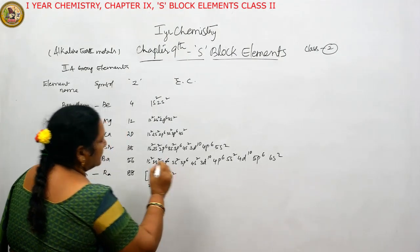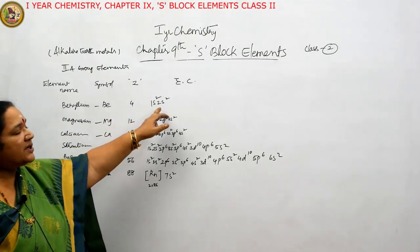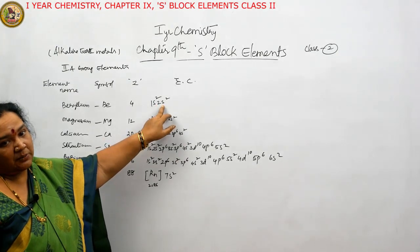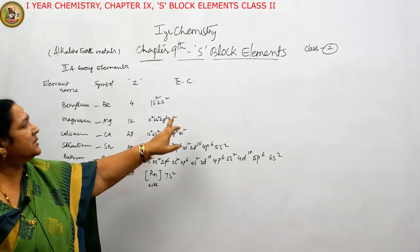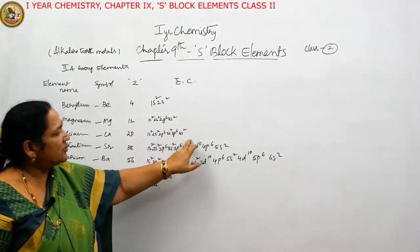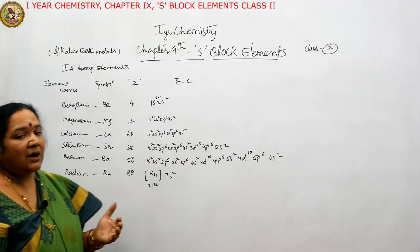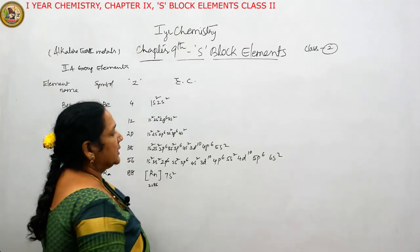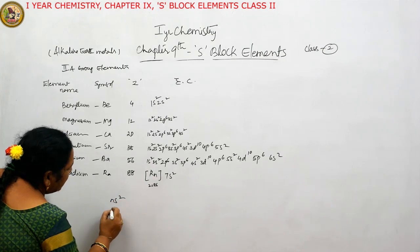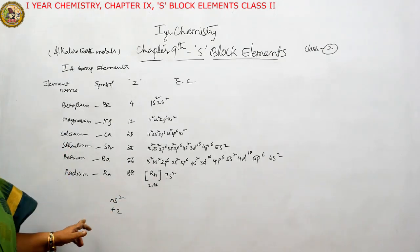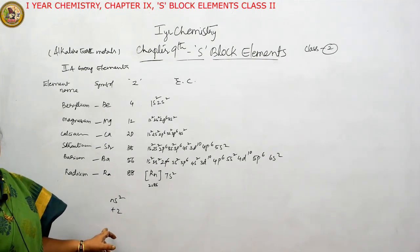For radium (Z=88): 1s², 2s², 3s², 4s², 5s², 6s², 7s². So for all second group elements, the general electronic configuration ends in ns², where n is the principal quantum number. That's why their general electronic configuration is given as ns².